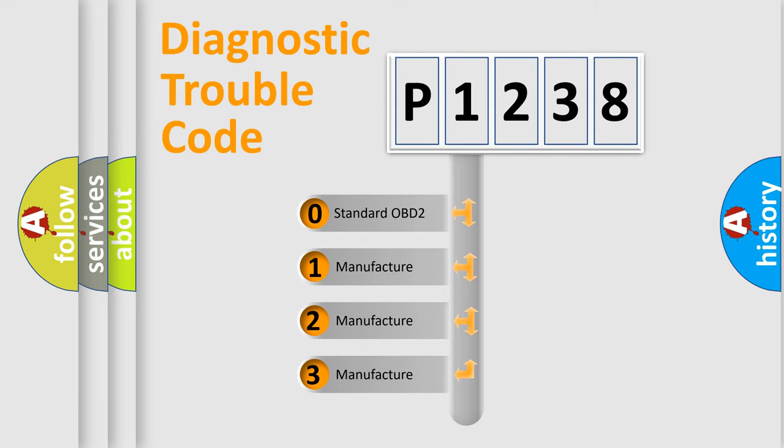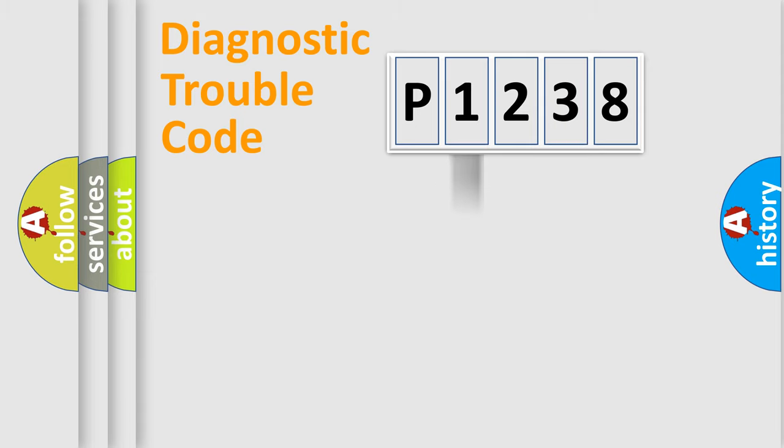If the second character is expressed as zero, it is a standardized error. In the case of numbers 1, 2, or 3, it is a manufacturer-specific expression of the car-specific error.